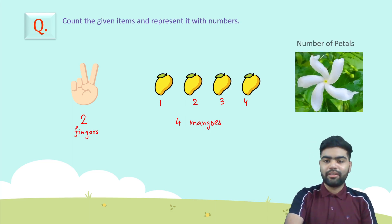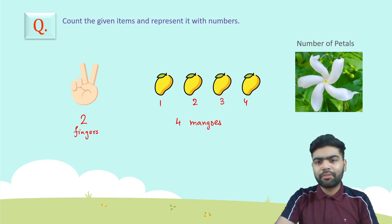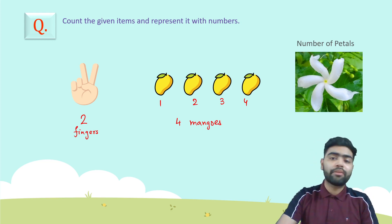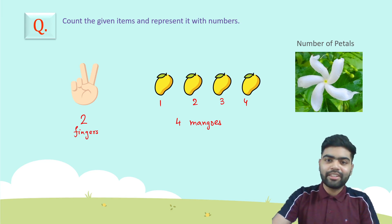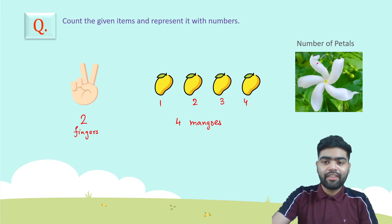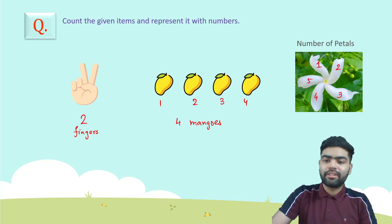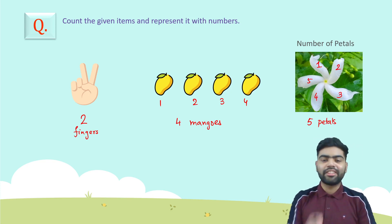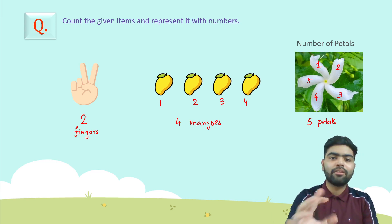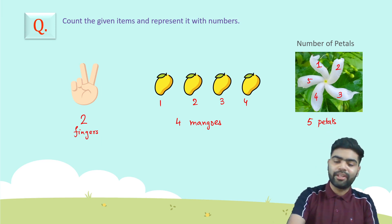Now here is a beautiful flower from your garden. You can see there are petals on this flower. How many petals are there? One, two, three, four, and five — so there are five petals on this particular flower. Great job! This is how you count natural numbers.